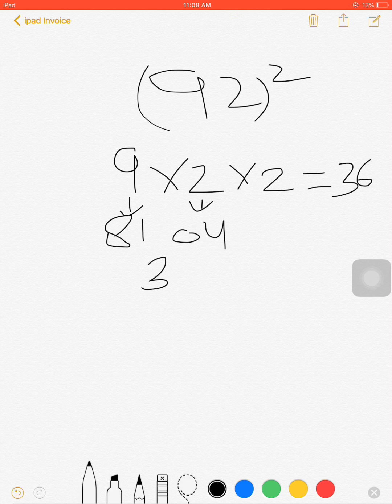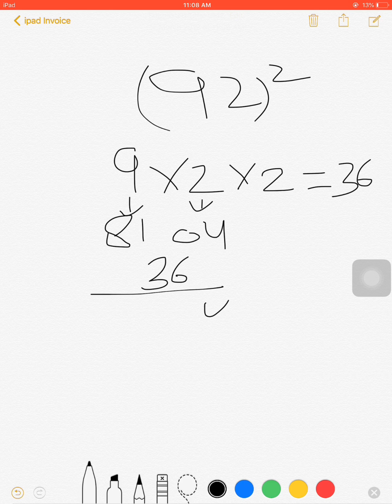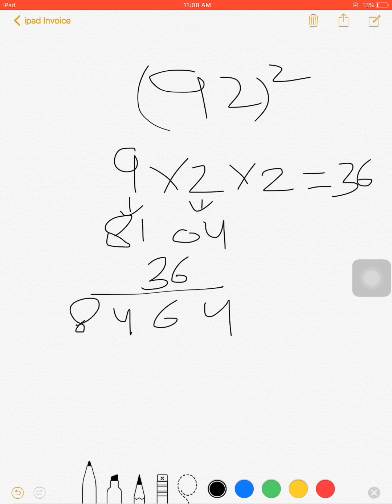So add this 36 here - 4, 6, 4, 8. So the square of 92 is 8464. You can do this trick orally also.